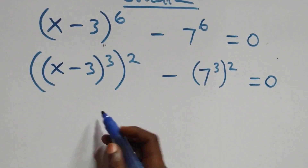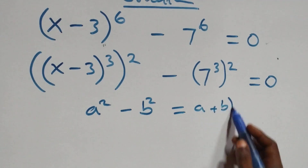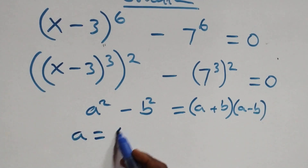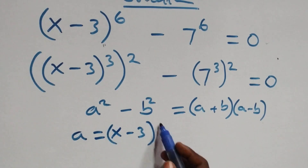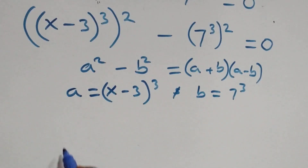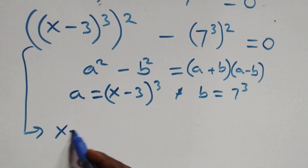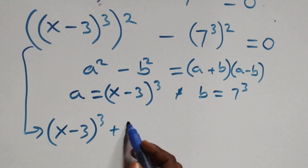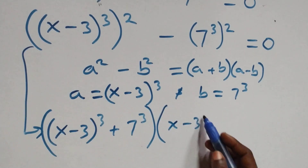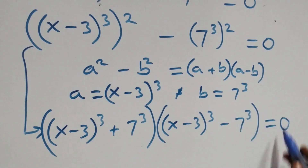The next step, this follows the difference of two squares. When we have a squared minus b squared, this is the same as a plus b in brackets, times a minus b in brackets. Here a stands as x minus 3 all raised to power 3, and b stands as 7 raised to power 3. So we have x minus 3 all raised to power 3, plus 7 raised to power 3, times x minus 3 all raised to power 3, minus 7 raised to power 3, equals to 0.